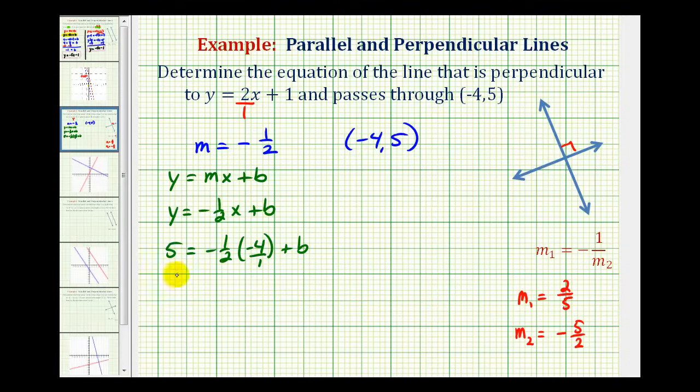So we'd have 5 equals negative 1 half times negative 4 plus b. Put the negative 4 over 1. Notice how this simplifies. So this becomes negative 1 times negative 2. Don't forget about this sign here. Now if we subtract 2 on both sides, we have b equals positive 3. So now we have our equation, we'll just substitute positive 3 for b, and the equation will be y equals negative 1 half x plus 3.